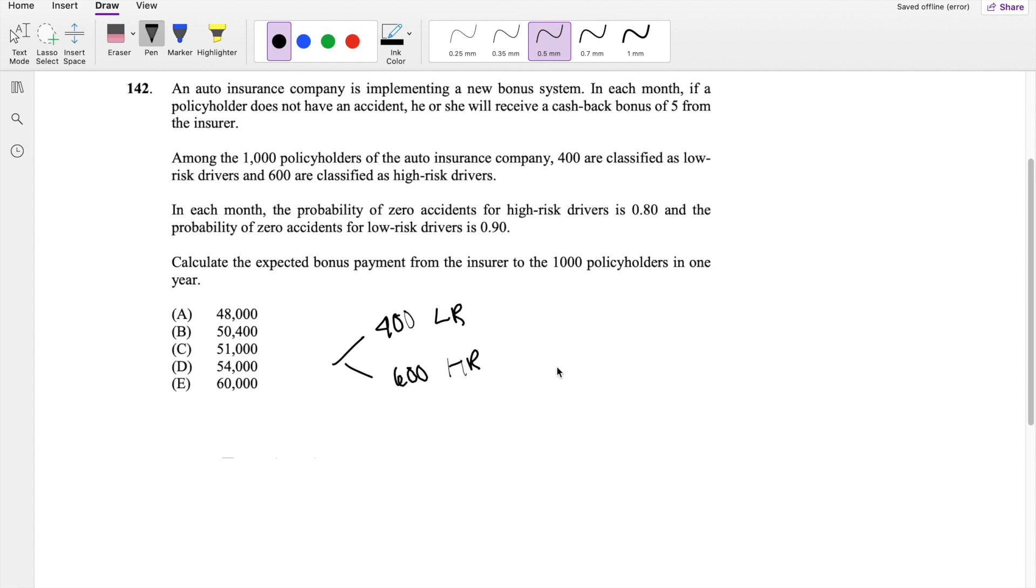In each month, probability of zero accidents for high risk driver is 0.8. And for low risk driver, it's going to be 0.9. Calculate the expected bonus payment from the insurer for the 1,000 policyholders in one year.